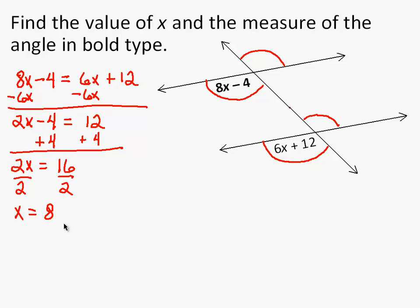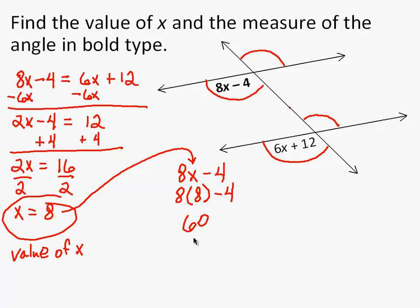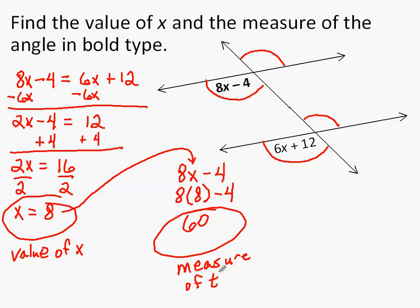Now to find the measure of the angle in bold type — that was 8x minus 4, and x is 8. So that leaves 8 times 8 minus 4. 8 times 8 is 64, and 64 minus 4 is 60. So x equals 8, and the measure of the angle is 60 degrees.